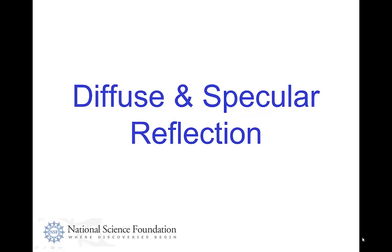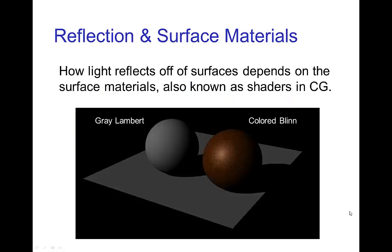Diffuse and specular reflection. The way that light reflects off a surface depends on the material that the surface is made of. Reflection off of wood looks different from metal, looks different from paper. It's not just the color but the way that you have a highlight, whether the reflection is diffuse, and so forth.